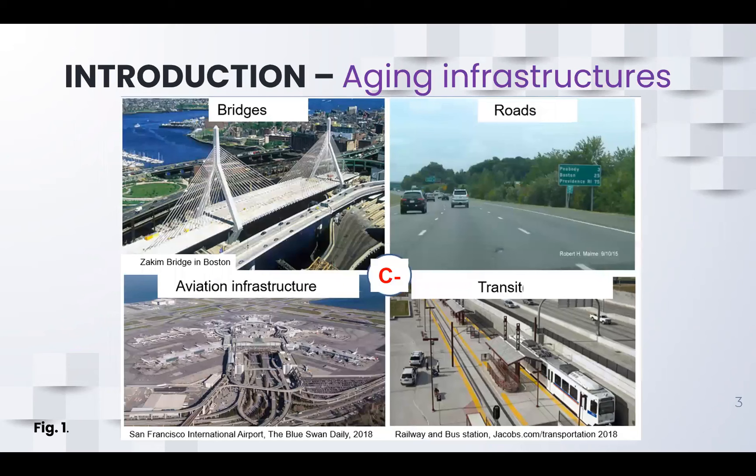In most developed countries, the challenge they face with infrastructure has to do with aging, because some of these infrastructures were constructed so many years ago, and as time goes on and as they are in operation they go through various deterioration processes. In 2021, when the ASCE graded the US infrastructure, it came to C minus, which is an improvement because in 2012 it was about D.